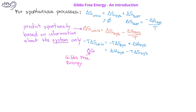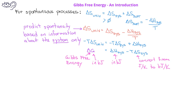Since we have three different terms that are energy units, we need to make sure that each of those are in similar units. Gibbs free energy and enthalpy are typically found in kilojoules, and so we'll need to convert the entropy change, which is usually in joules per Kelvin, into kilojoules per Kelvin.